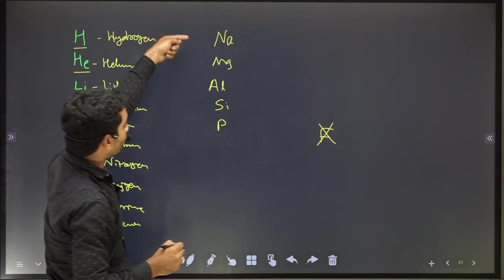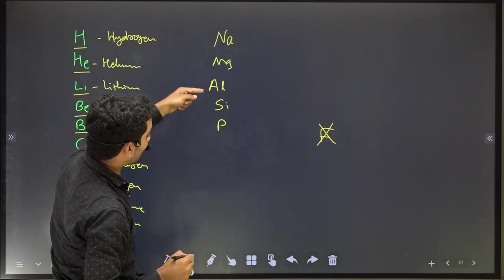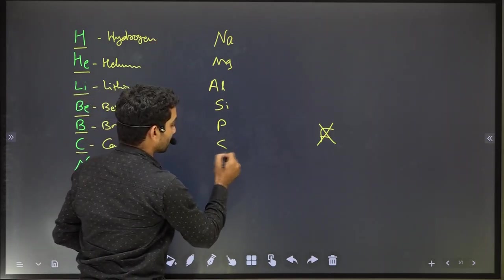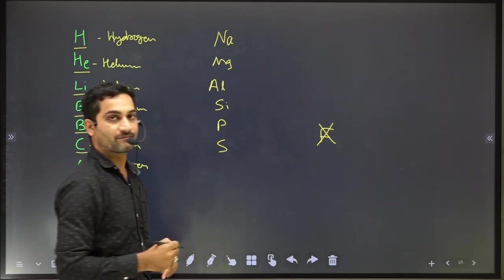So the mnemonic continues: Soh May A C 4 Sa — meaning Sodium, Magnesium, Aluminium, Silicon, Phosphorus, Sulphur. Then Cl means Chlorine, A means Argon.